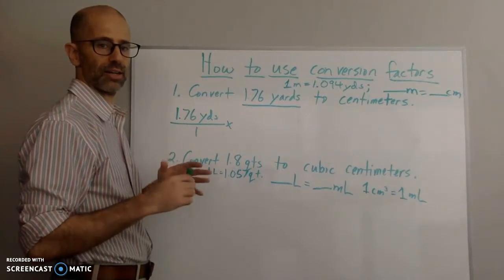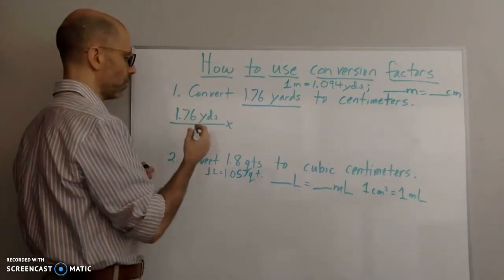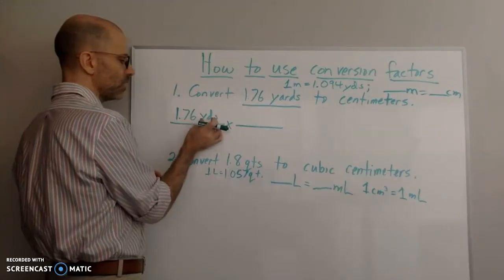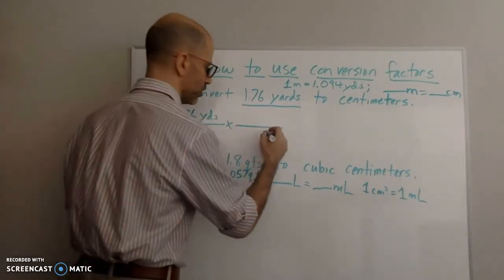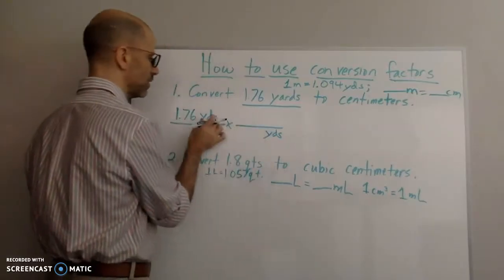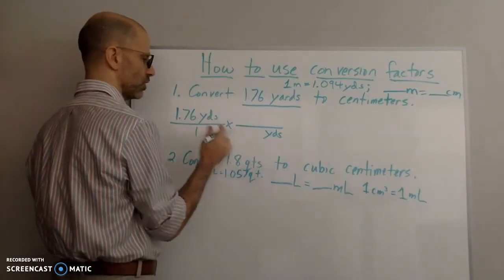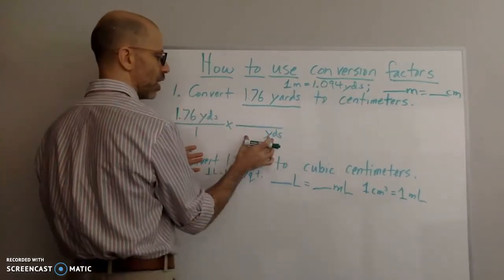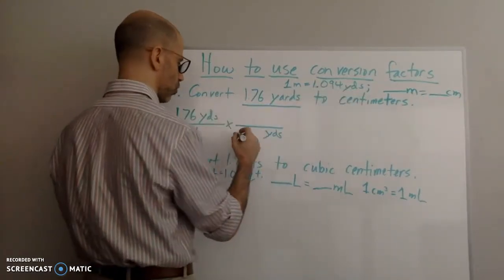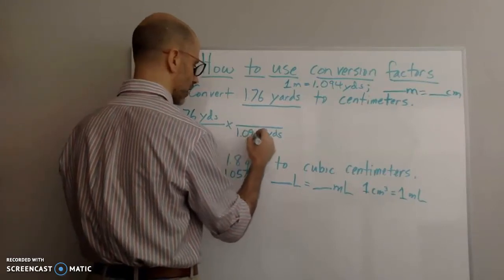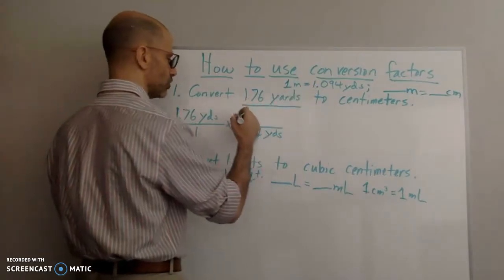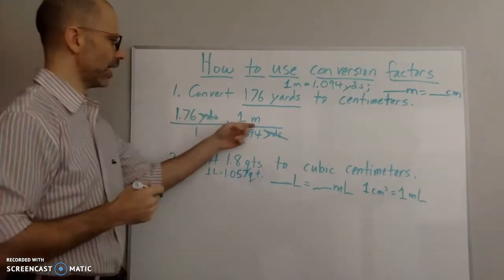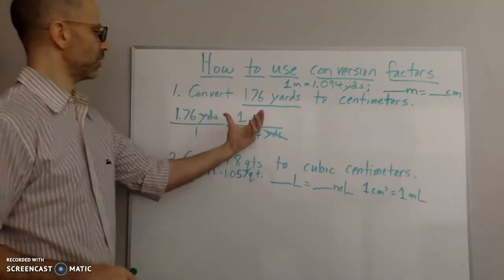For my first conversion factor, I need yards on the bottom because I have yards on top — they need to cancel out. Using the equality provided, I put 1.094 yards on the bottom and 1 meter on top. Now yards cancel out and I have meters. But I need centimeters, so I'm not done yet.